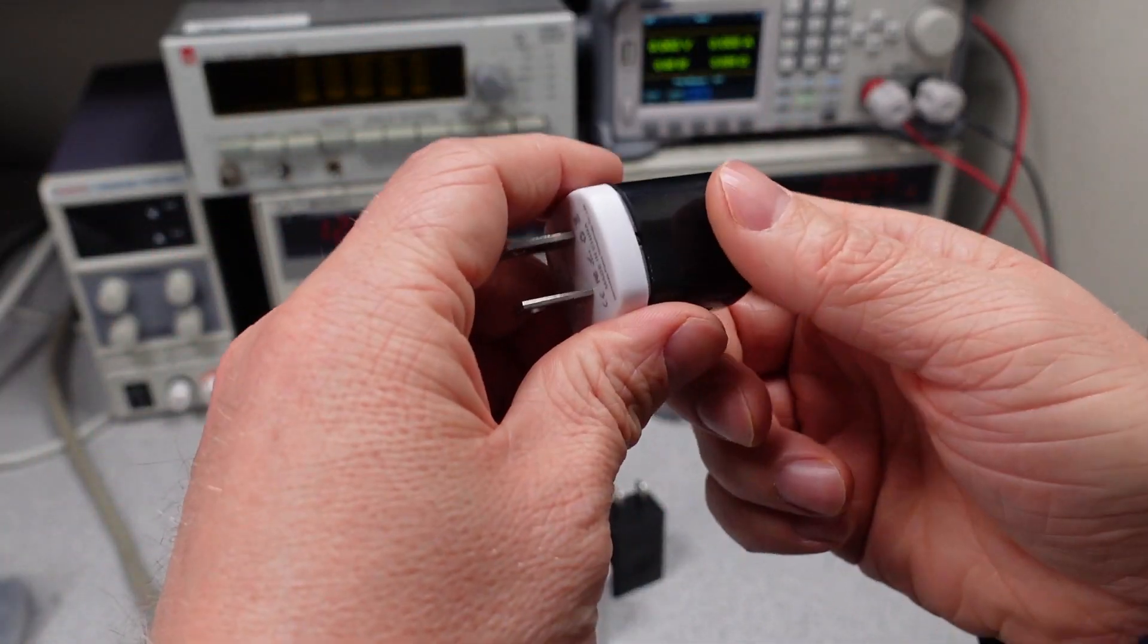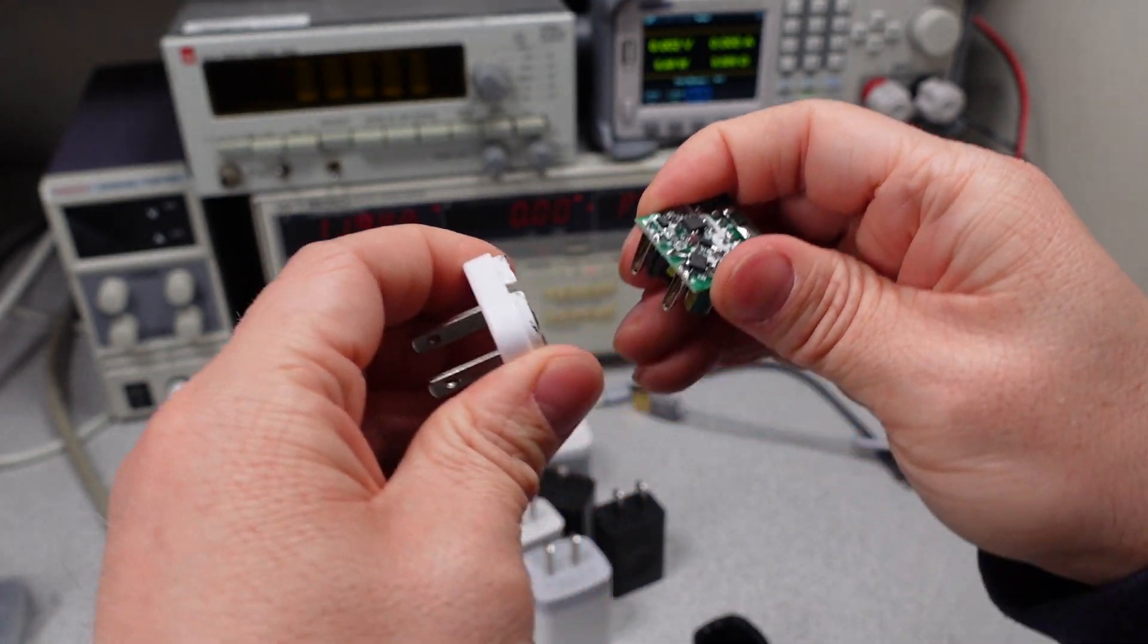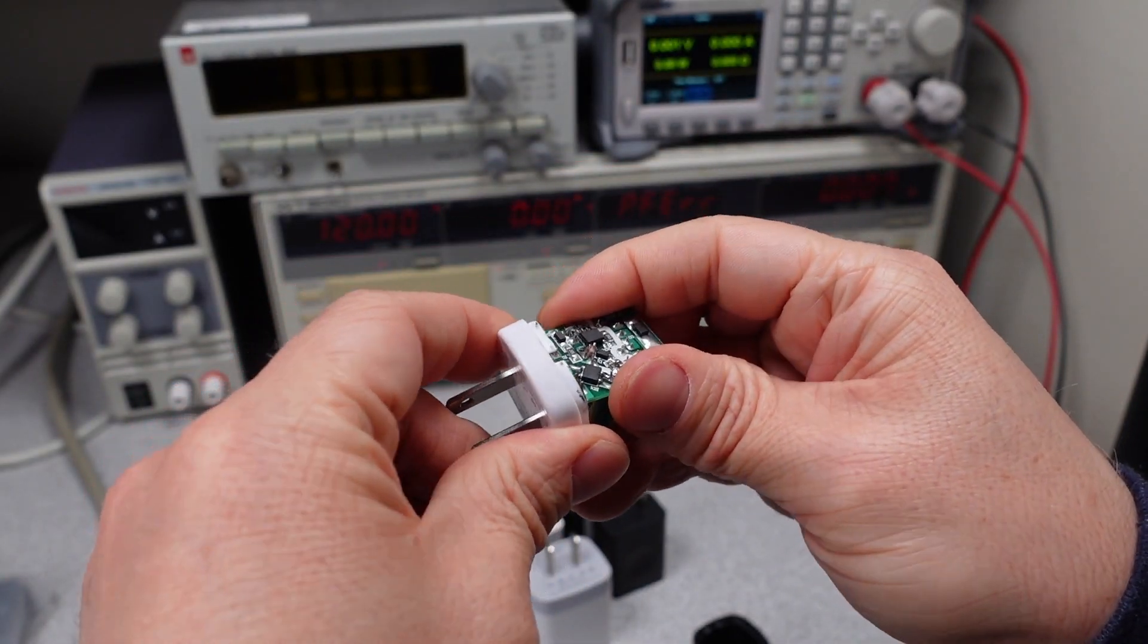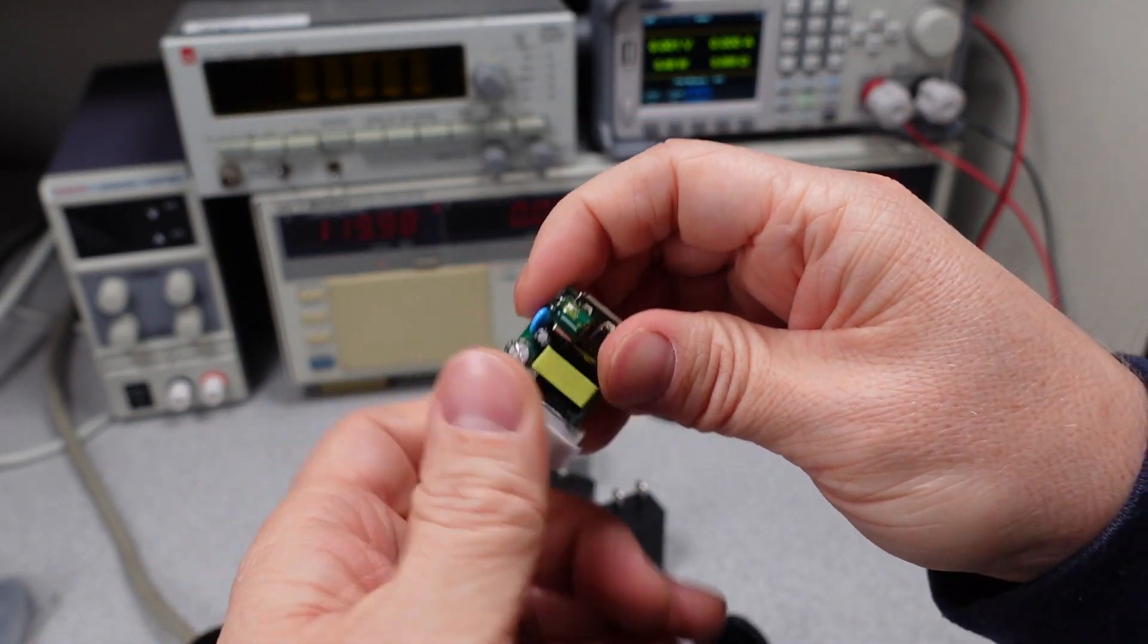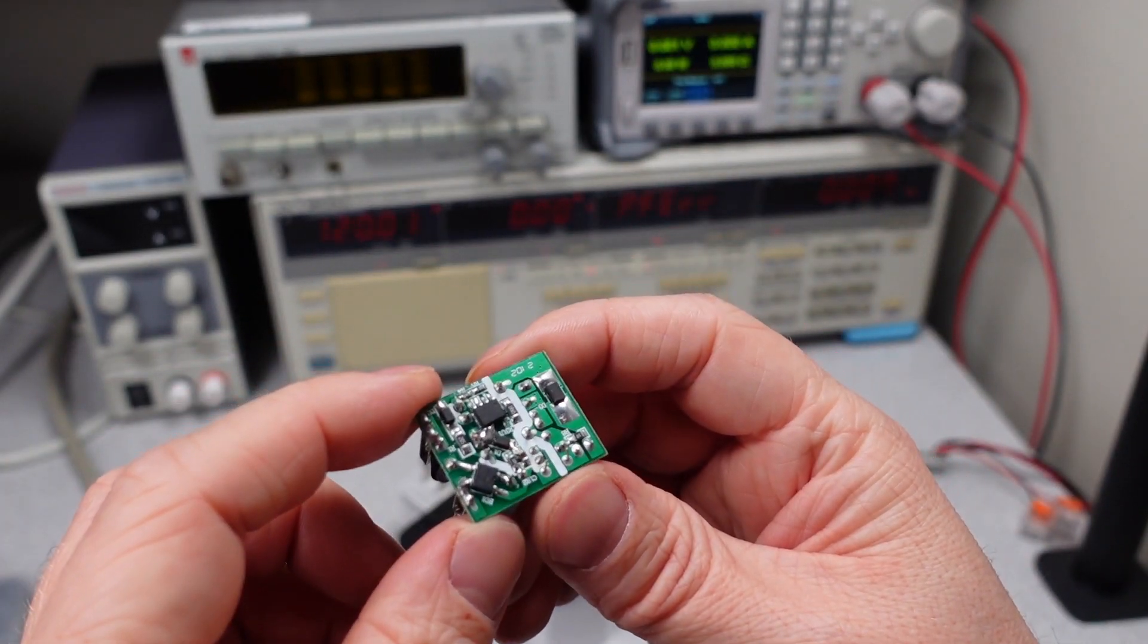So what should you do about unsafe power adapters? Don't use them. Dispose of them at your local e-waste collection center and be careful and remember safety when choosing products. Not all products have safety listings and many bad products don't have listings. Some companies fake the listings, the most dangerous, so buyers certainly have to be aware.